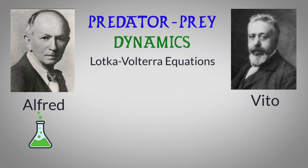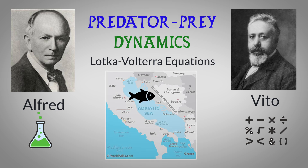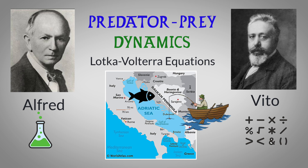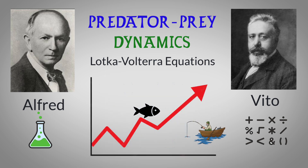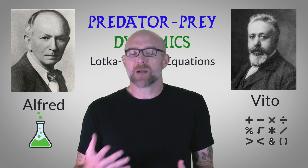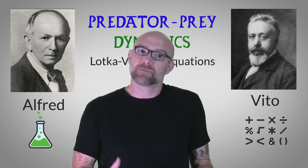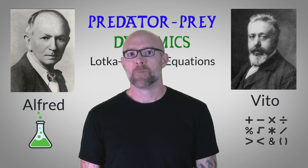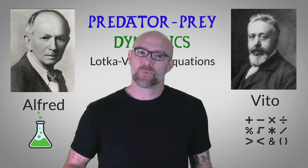Vito Volterra, on the other hand, was a mathematician. He independently developed predator-prey equations around the same time as Alfred. Vito observed fish populations in the Adriatic Sea during World War I, when fishing activity in the region decreased due to the war. He noticed that as a result of the reduced fishing pressure, fish populations began to increase — perhaps not super shocking — but his observation led him to propose a mathematical model to describe the interaction between a predator species and a prey species in an ecological system.